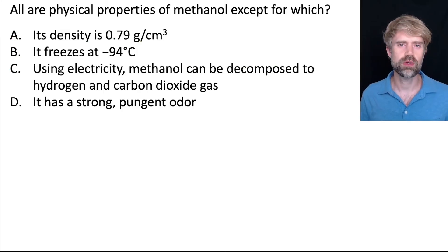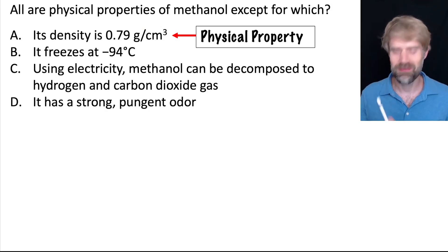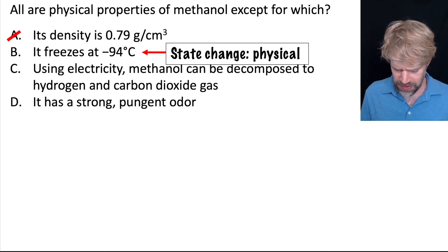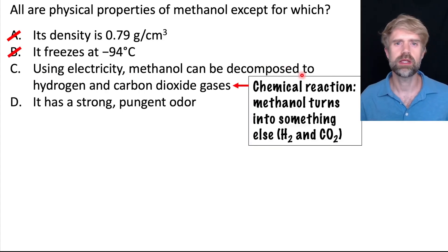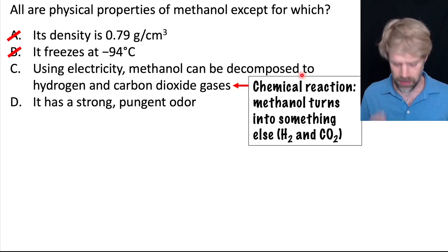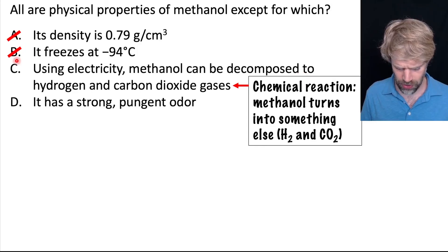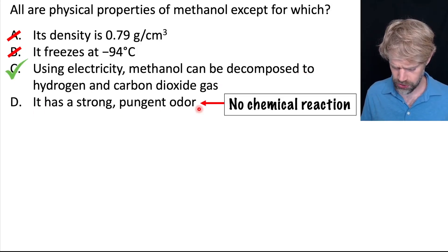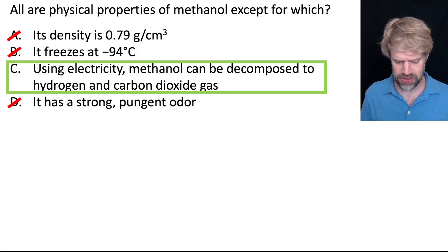Last question: all are physical properties of methanol except for which? A: its density is 0.79 grams per cubic centimeter — density is always a physical property. Cross it off. B: it freezes at negative 94 degrees Celsius — state change temperatures are physical properties. Cross it off. C: using electricity, methanol can be decomposed to hydrogen and carbon dioxide gas — there's an example of methanol reacting to create something new, so that's a chemical reaction and C describes a chemical property. D: it has a strong, pungent odor — that just tells us how it smells, no change involved, so it's physical. C is our correct answer.